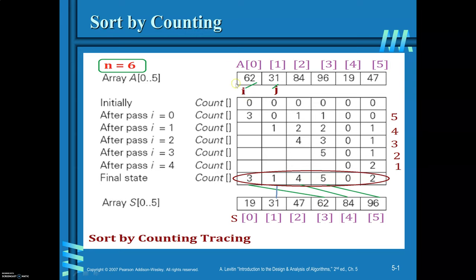For example, for element 62 the count is 3, meaning this element is to be copied onto the third index of the sorted array S. So in S[3] you copy 62. Similarly, 31 has count 1, so it is copied to index 1. For 96 the count is 5, so element 96 is copied onto the fifth index of array S. This way you arrange all elements in ascending order.